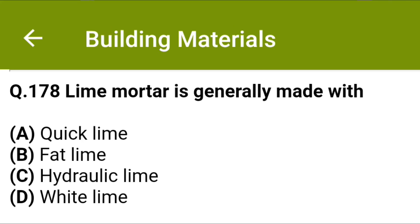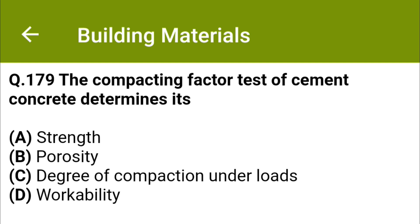Lime water is generally made with: option A quick lime, option B fat lime, option C hydraulic lime, option D white lime. The correct answer is option C: hydraulic lime.